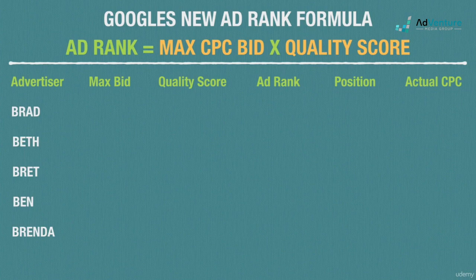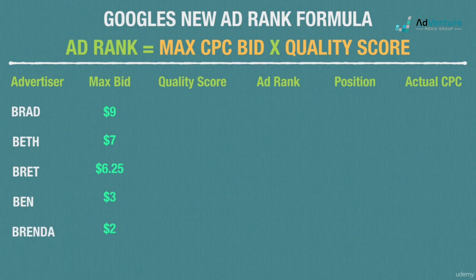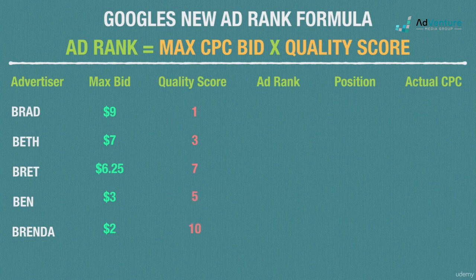Brad sets his max CPC bid at $9, Beth sets hers at $7, Brett is willing to pay no more than $6.25, Ben's max is $3.00, and Brenda is the most frugal at $2.00. For quality scores: Brad gets a 1, Beth lands a 3, Brett gets a 7, Ben is mediocre with a 5, and Brenda hits the jackpot with a 10.